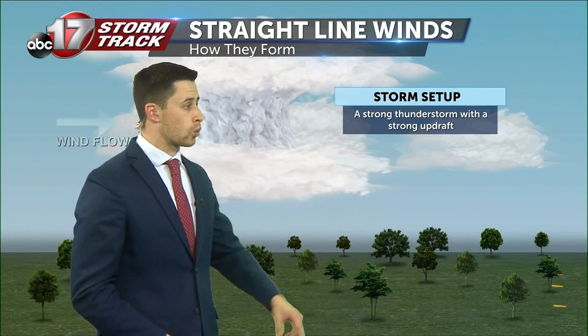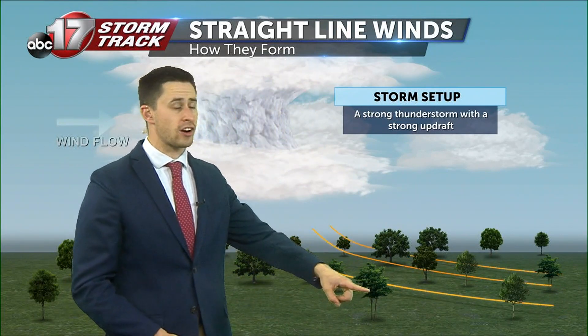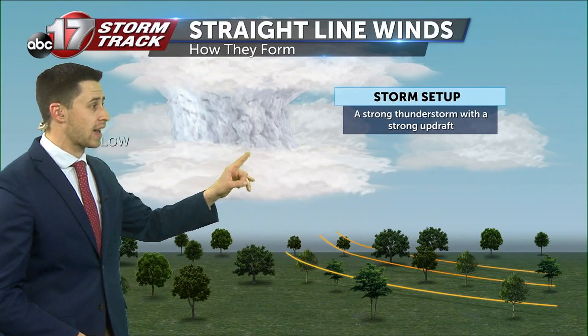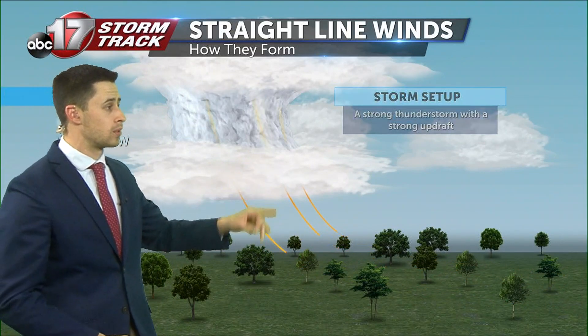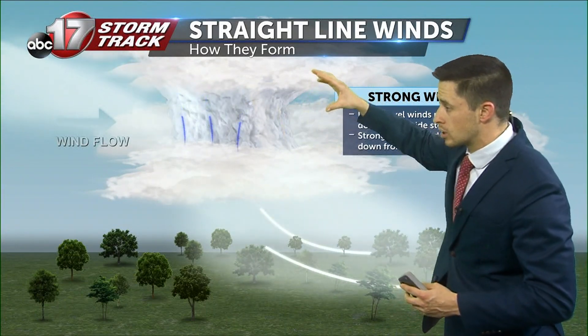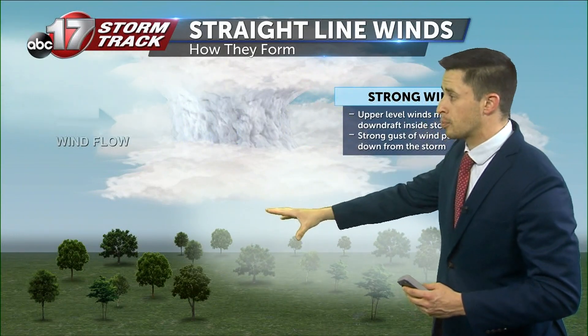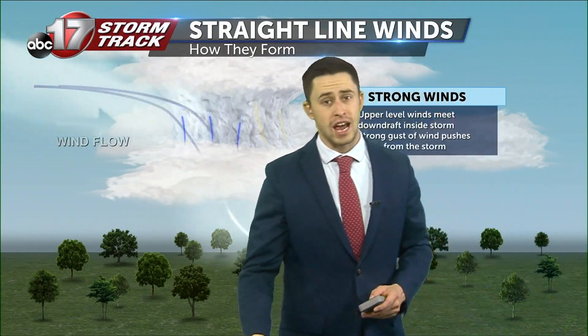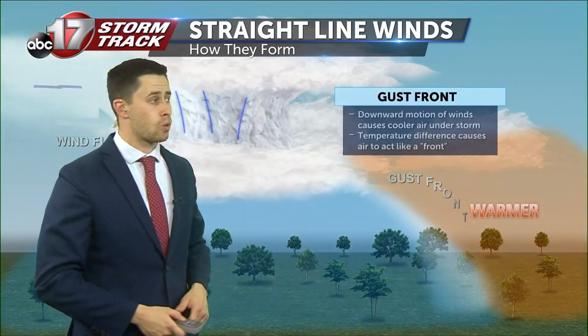Typically with straight line winds, we're going to have that warm air out in front of the storm. Eventually it will create updraft back into the storm. Now, there are upper level winds flowing like the lower jet stream. That warmer air that rises eventually has to cool back down, and is forcing the upper level winds back down to the surface of the earth. That will rush out ahead of the storm and create what we call a gust front.